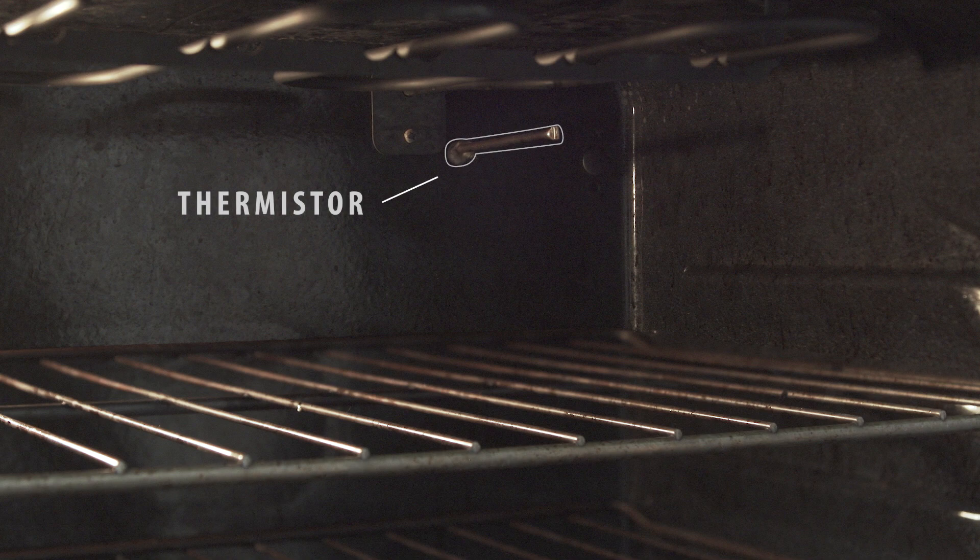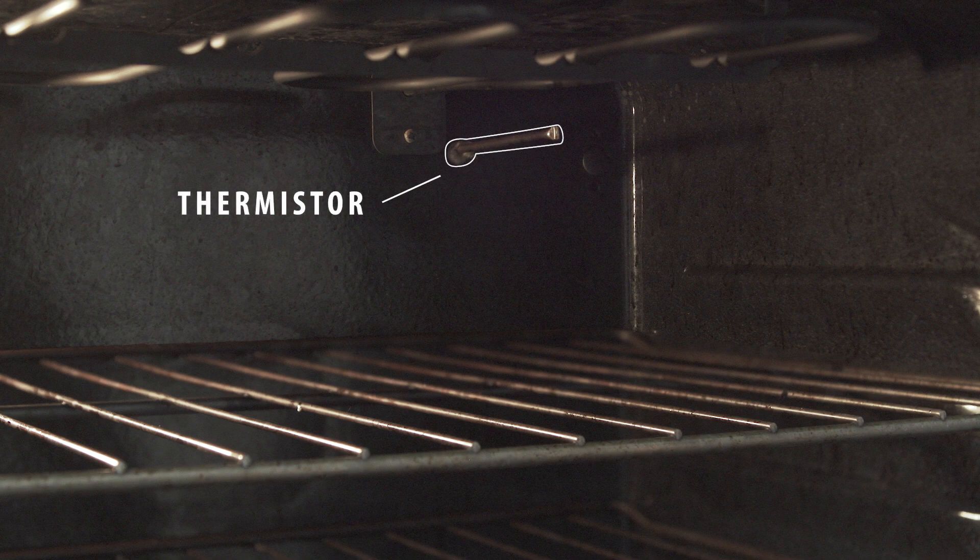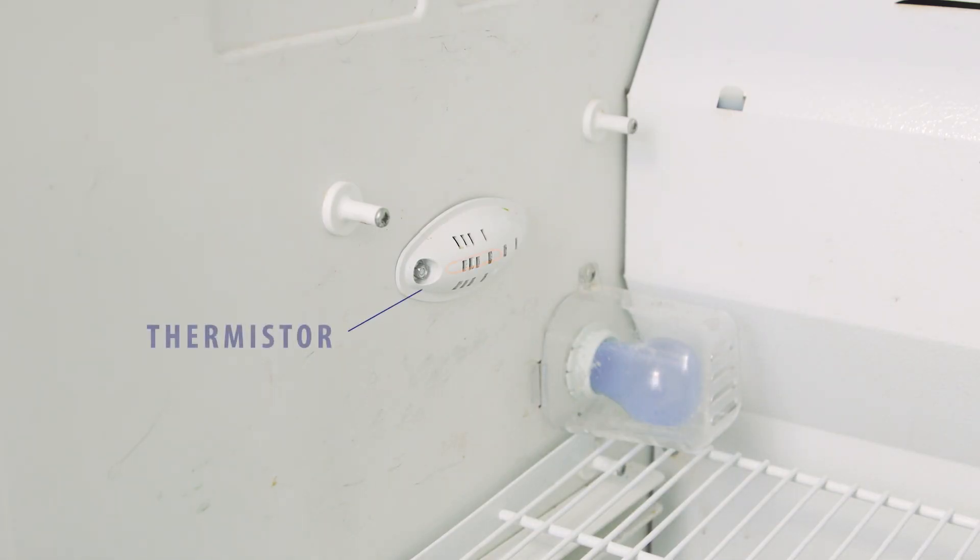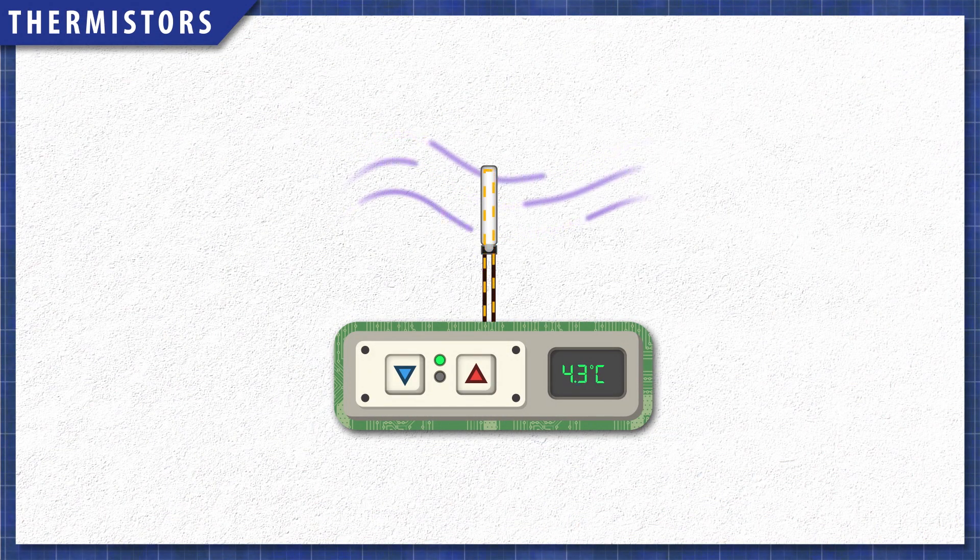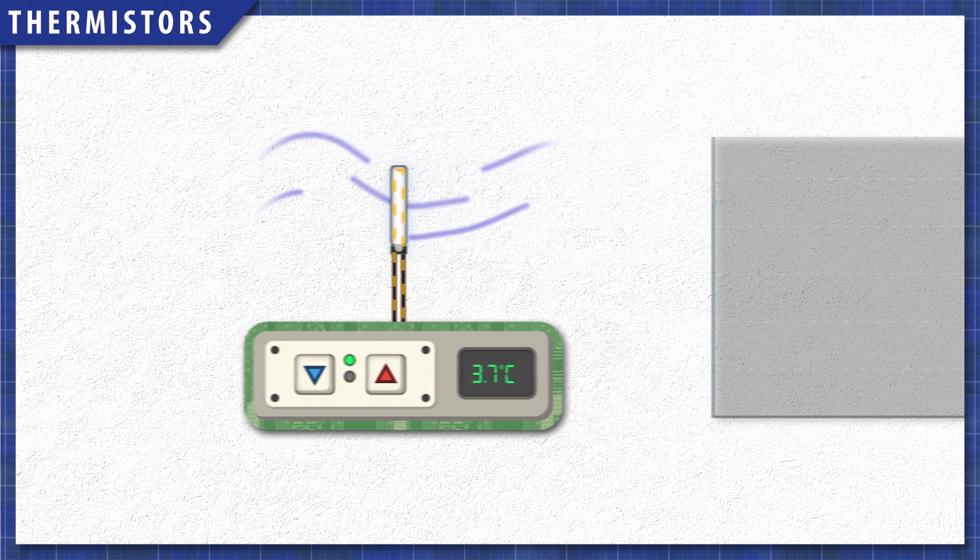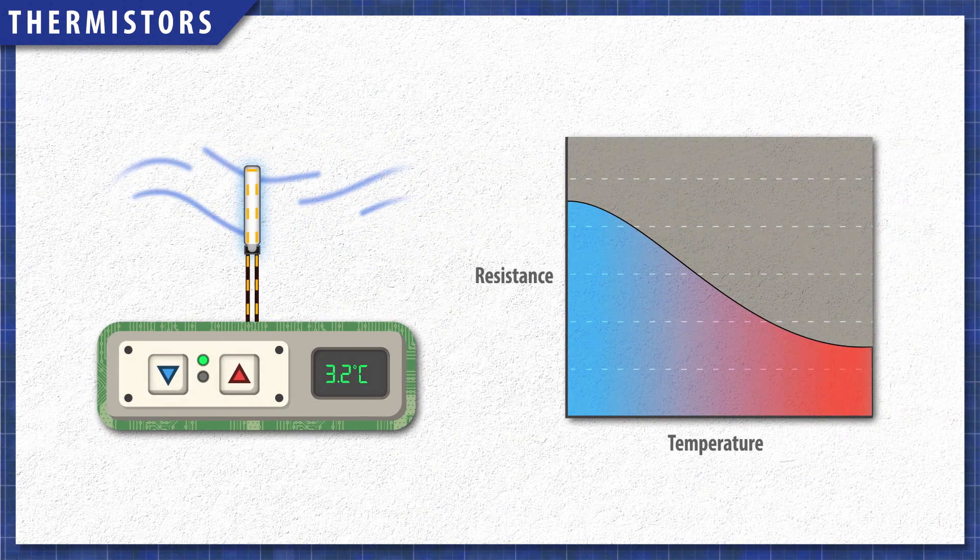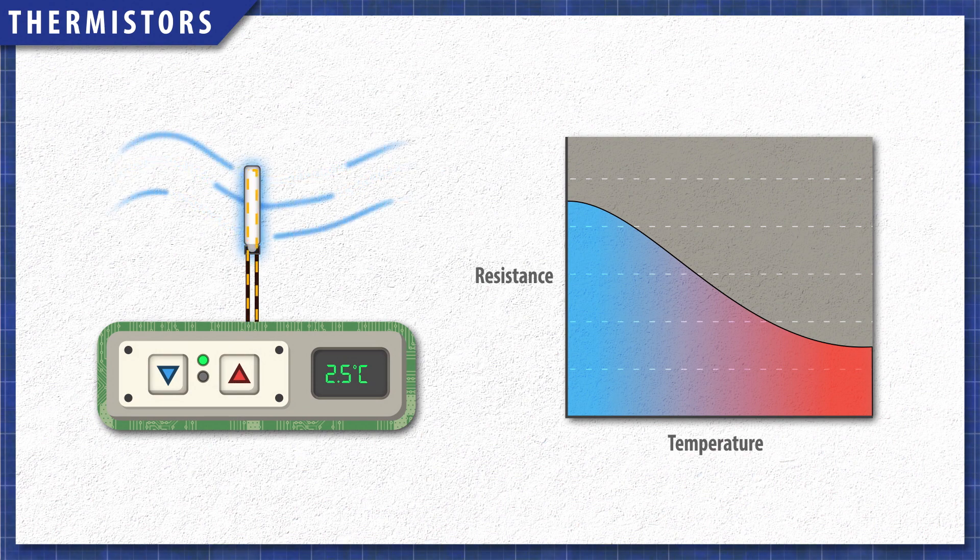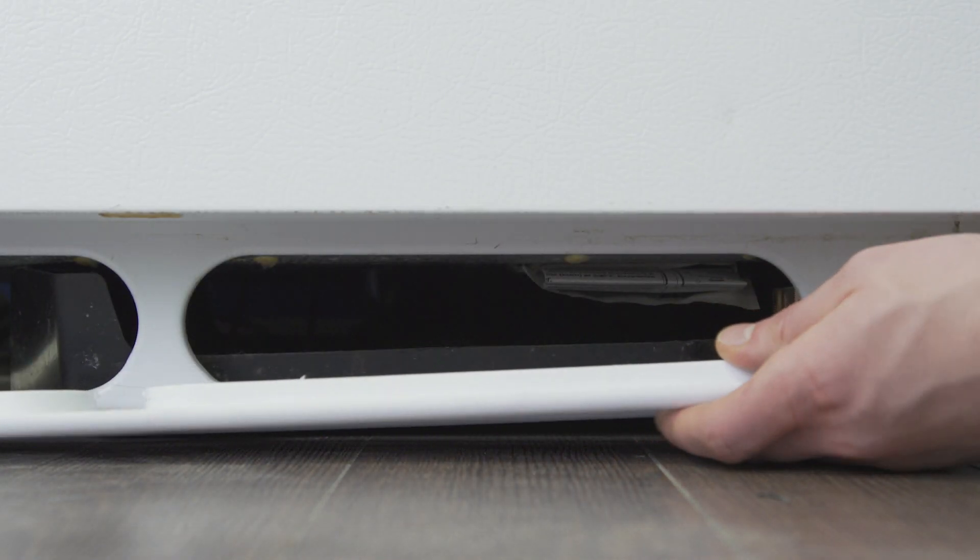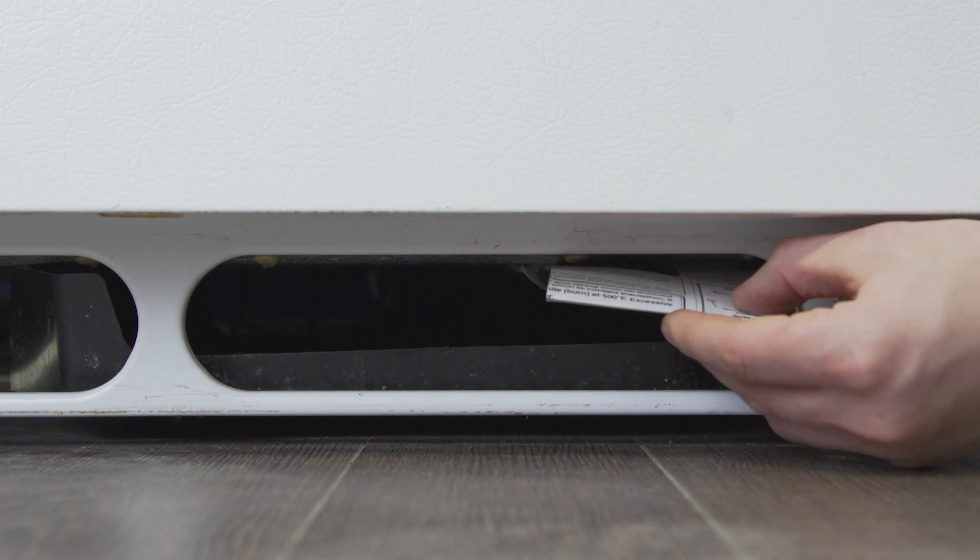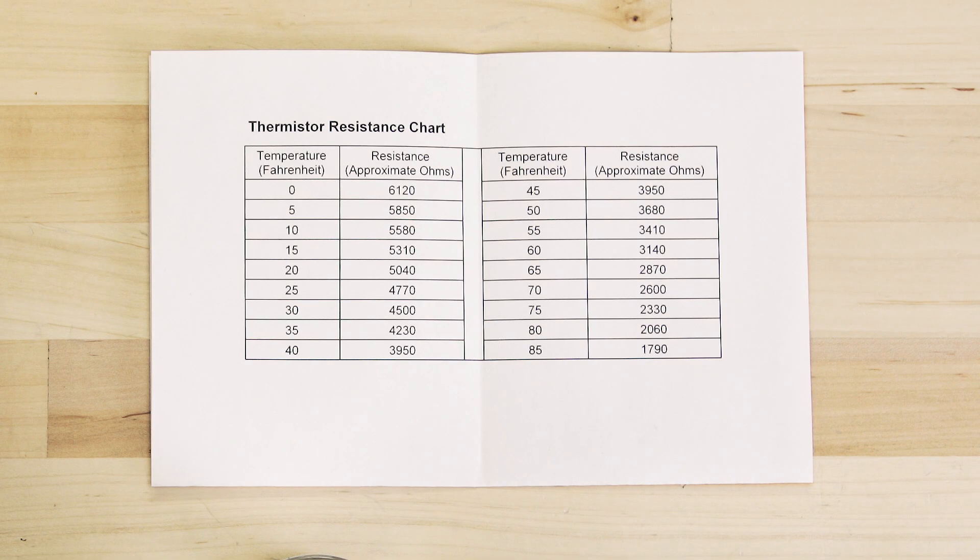Thermistors are temperature sensing devices commonly used in ovens, stoves, and refrigerators. They have a specific resistance that the control board interprets to determine the temperature. The resistance changes as the temperature changes. For example, we can test the temperature sensor in a refrigerator. For this, we'll need the temperature chart which is often stored behind the kick plate, or behind a cover on the back.